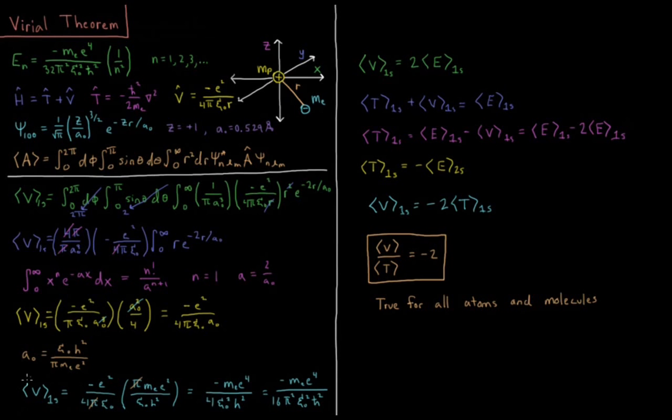When I do that substitution for A0, a lot of things end up canceling. This pi cancels with that pi, giving minus m e e to the fourth over 4 epsilon not squared h squared. If I translate this into h bar instead of h, I get negative mass of the electron e to the fourth over 16 pi squared epsilon not squared h bar squared.